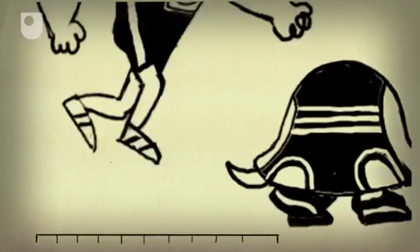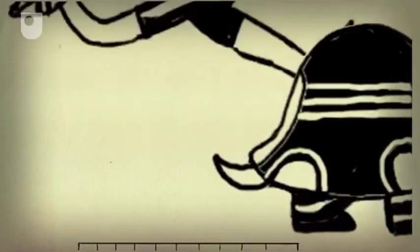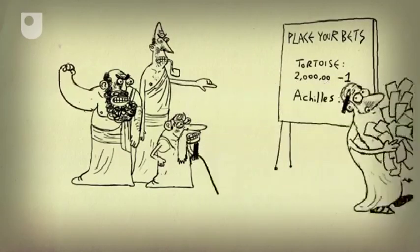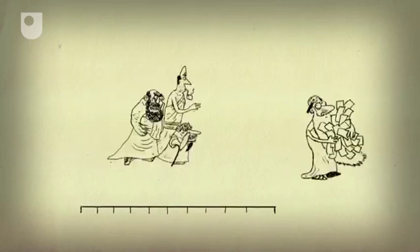Logically this would carry on forever. However small the gap between them, the tortoise would still be able to move forwards while Achilles was catching up, meaning that Achilles could never overtake.